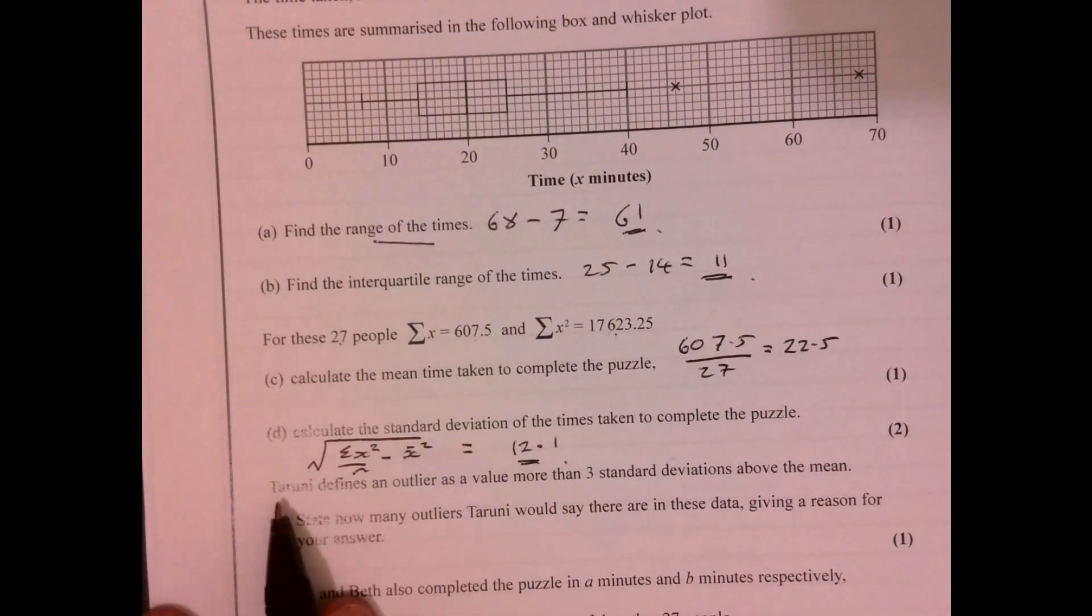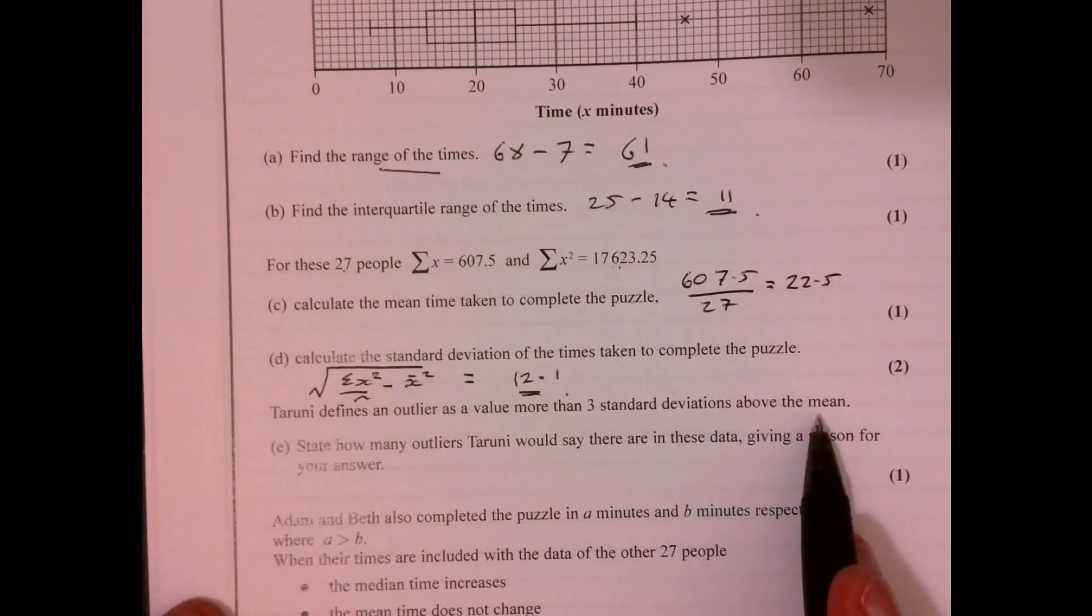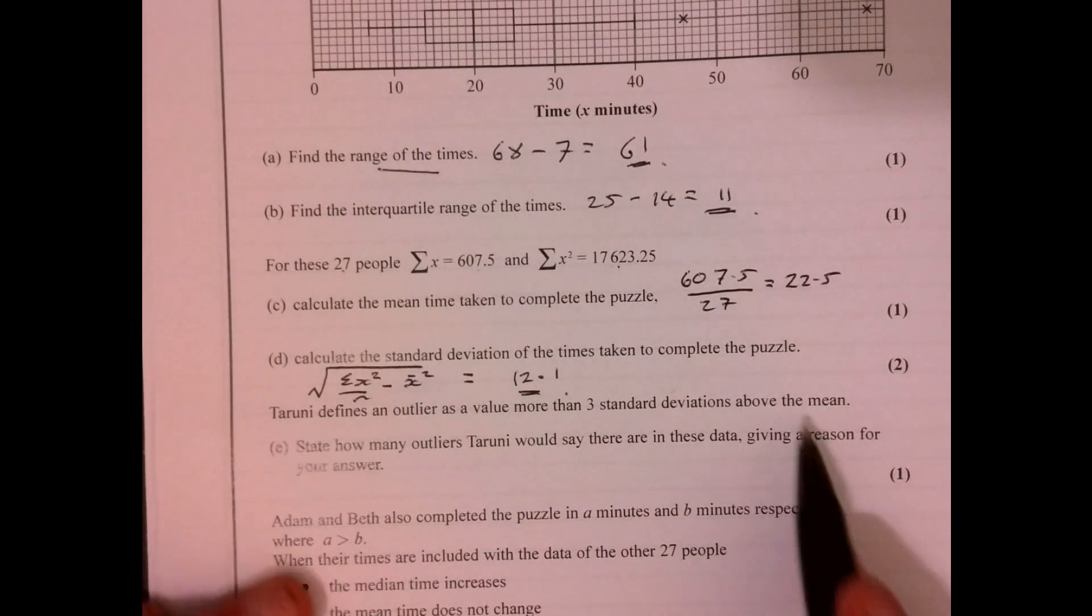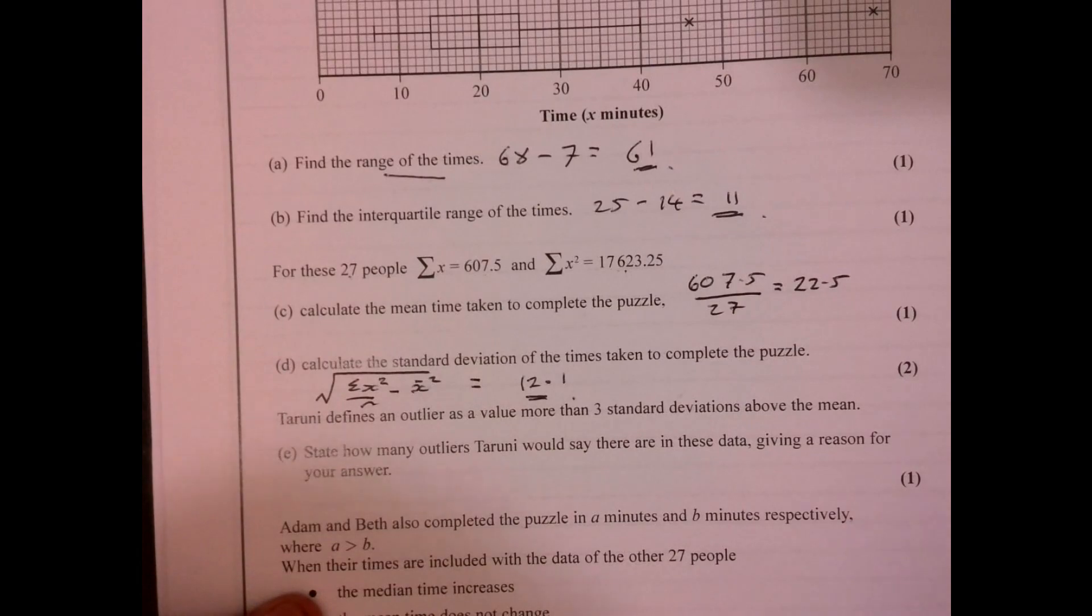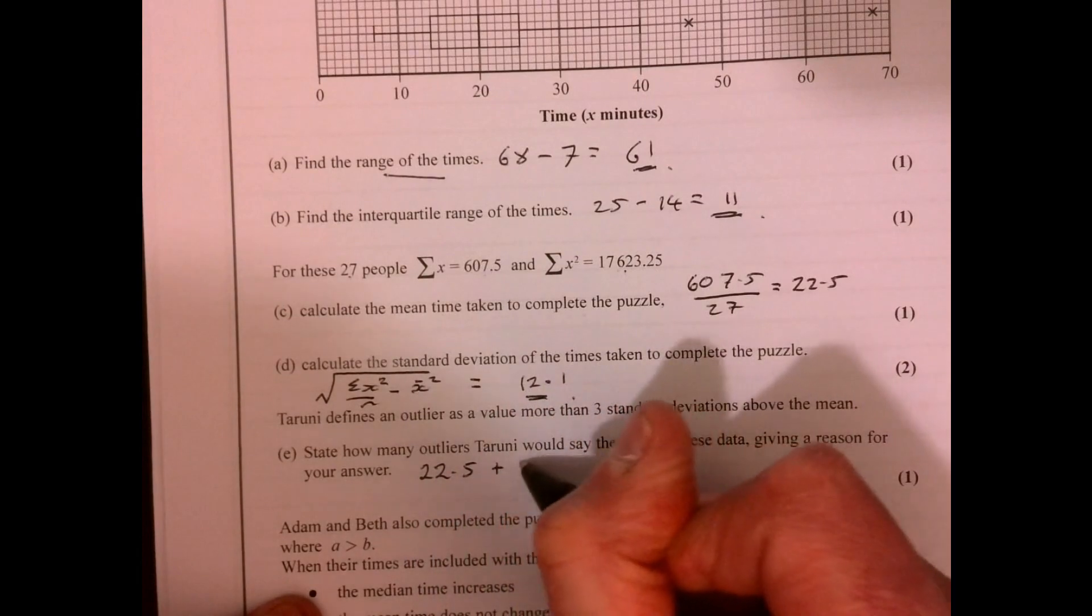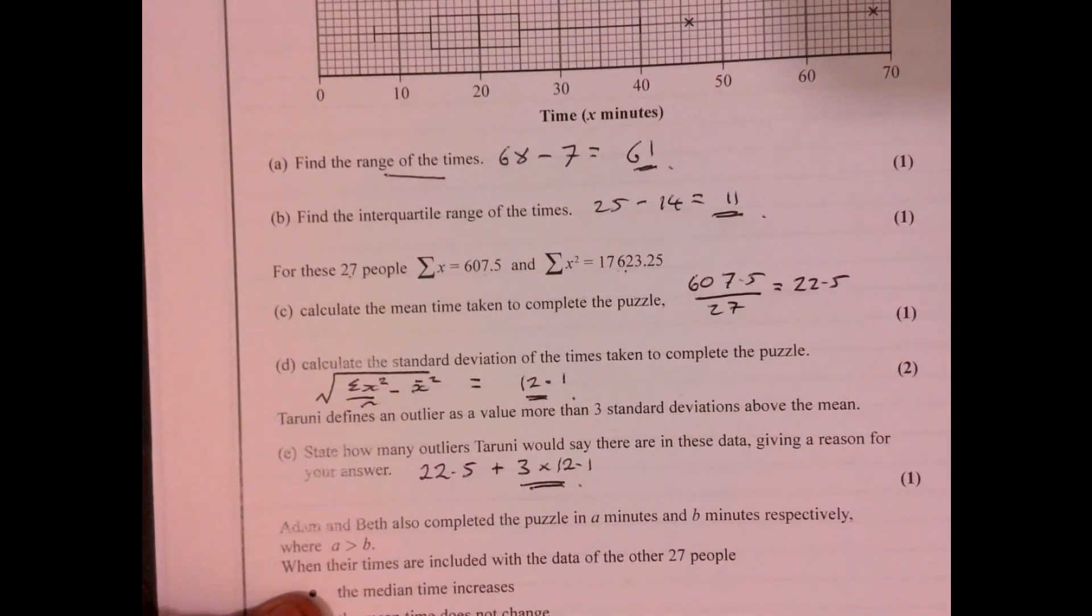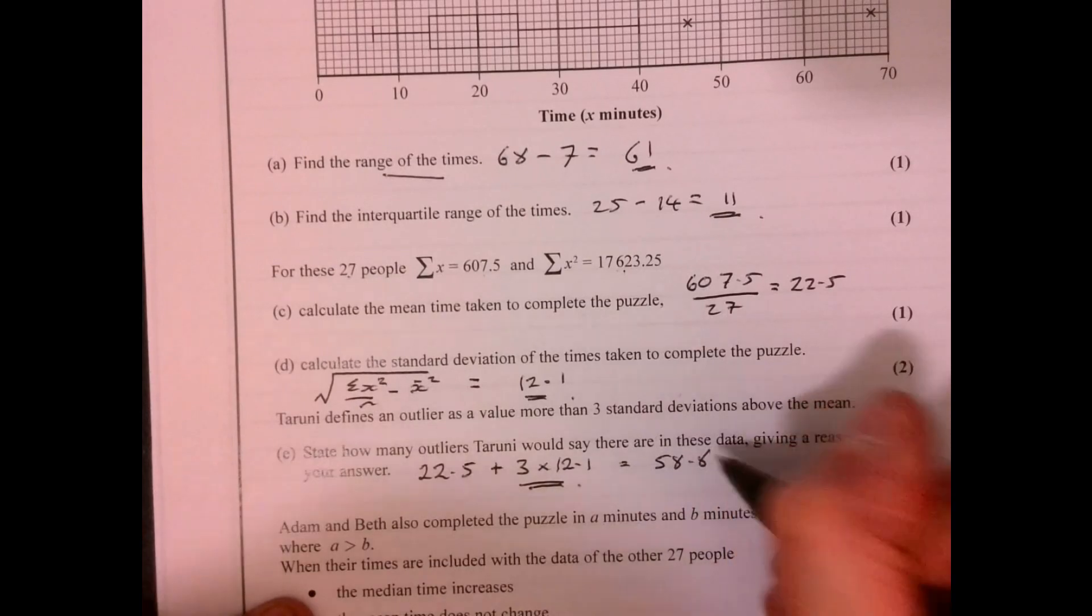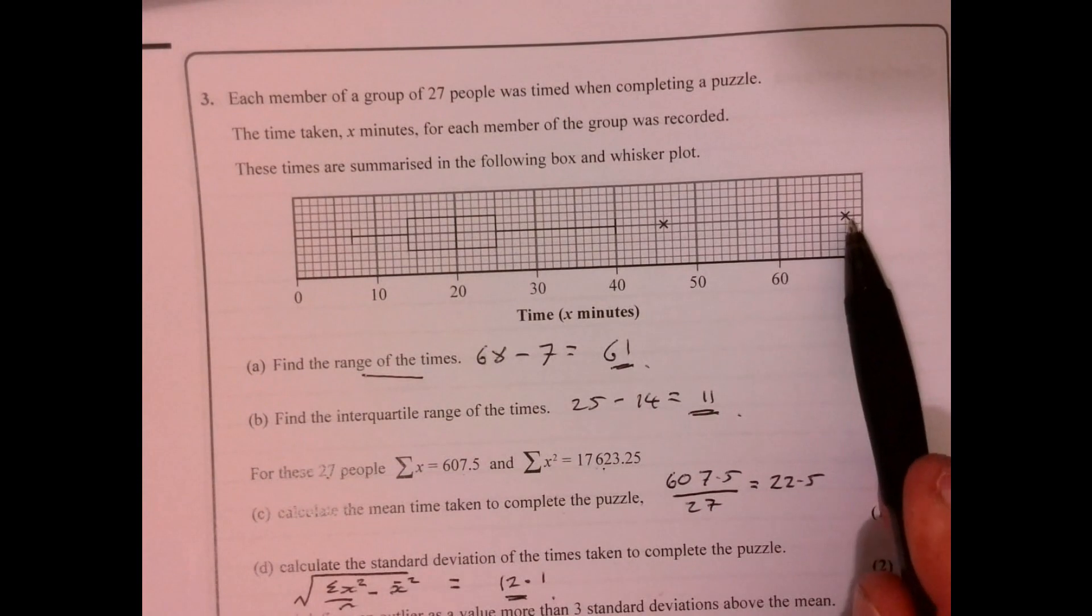Now we define an outlier as a value more than three standard deviations above the mean. So let's think about what value is three standard deviations above the mean. If we do 22.5 plus three lots of 12.1, that gives us a value of 58.8.